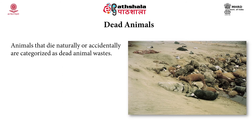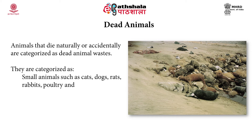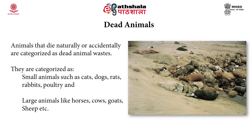Animals that die naturally or accidentally are categorized as dead animal waste. They are generally categorized into two types: small animals and large animals. Small animals include cats, dogs, rats, rabbits, and poultry. Large animals include horses, cows, goats, and sheep.